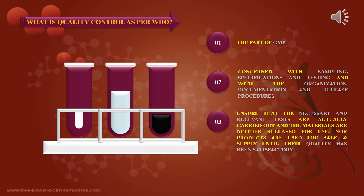As per WHO, quality control is the part of GMP concerned with sampling, specification and testing, and with the organization, documentation and release procedures to ensure that the necessary and relevant tests are actually carried out, and that materials are neither released for use nor products used for sale and supply until their quality has been found satisfactory.